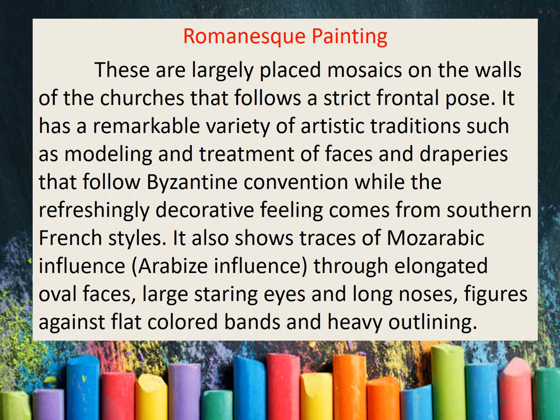The next one is Romanesque painting. These are largely placed mosaics on the walls of churches that follow a strict frontal pose. It has a remarkable variety of artistic traditions, such as modeling and treatment of faces and draperies that follow Byzantine convention, while the refreshingly decorative filling comes from southern French styles. It also shows traces of Mozarabic influence through elongated oval faces, large staring eyes, long noses, figures against flat color bands, and heavy outlines.